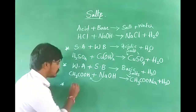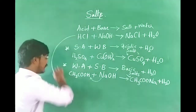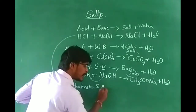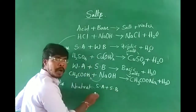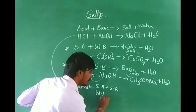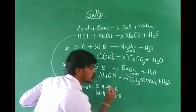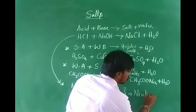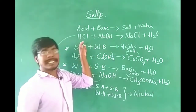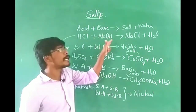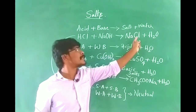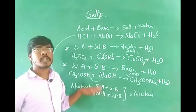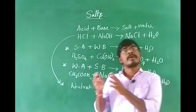Another type is neutral salts. When you come to neutral salts, it may be strong acid plus strong base, or it may be weak acid plus weak base — both produce neutral salts. For example, HCl is a strong acid and NaOH is also strong. Both react together to form NaCl, a common salt. This type of salt is called a neutral salt. This is the classification of salts based on the nature of the acids and bases which react together.